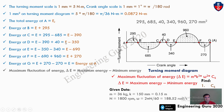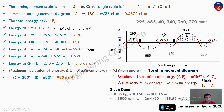Maximum energy is at point B: E + 295. Minimum energy is at point E: E − 690. So ΔE = (E + 295) − (E − 690) = 985 mm². Now multiply by the scale: 985 × 0.0872 = 86 N·m. This is our delta E value.